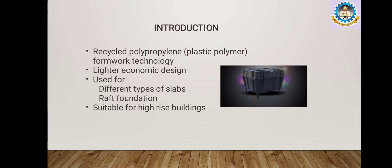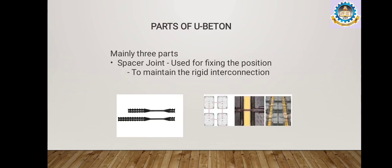U-boot Beton is a recycled polypropylene formwork that can be used to create two-way voided slabs and rafts. It was implemented in Italy for the first time. It is very lightweight and helps for economic designs. U-boot Beton is a simple solution for most problems in laying slabs and foundations where the bearing capacity of the soil is very low. It can also be used as a replacement for raft foundations, where slabs distribute loads to deeper soils.